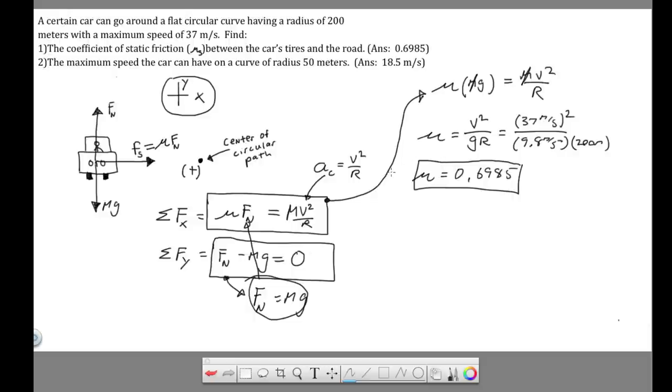The second question is find the maximum speed that this same car can have on a curve of radius 50 meters. And you know what, I'm just reading this here. The thing that's not specified is that it's the same road, because the assumption for part two is that the coefficient didn't change. So I guess I should make that clear right now. The maximum speed the car can have on the same surface, but with a smaller radius. So the idea is that the coefficient's the same.